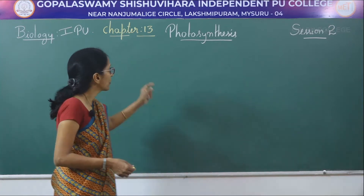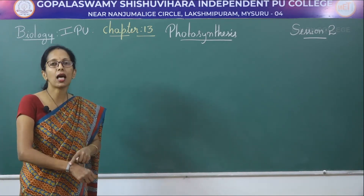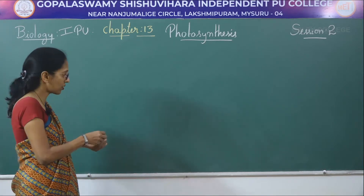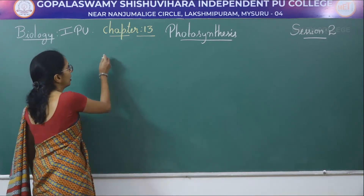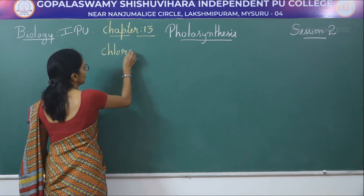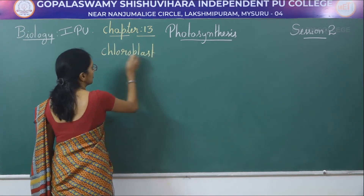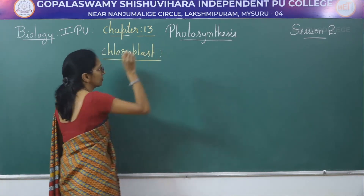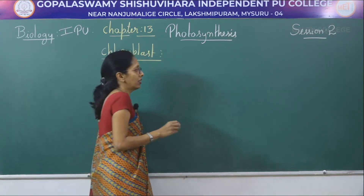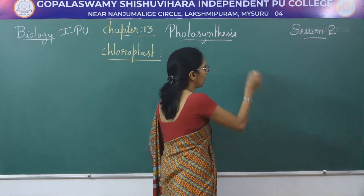Photosynthesis takes place in a special apparatus called the chloroplast. Before entering into the chloroplast, you need to understand some key words.